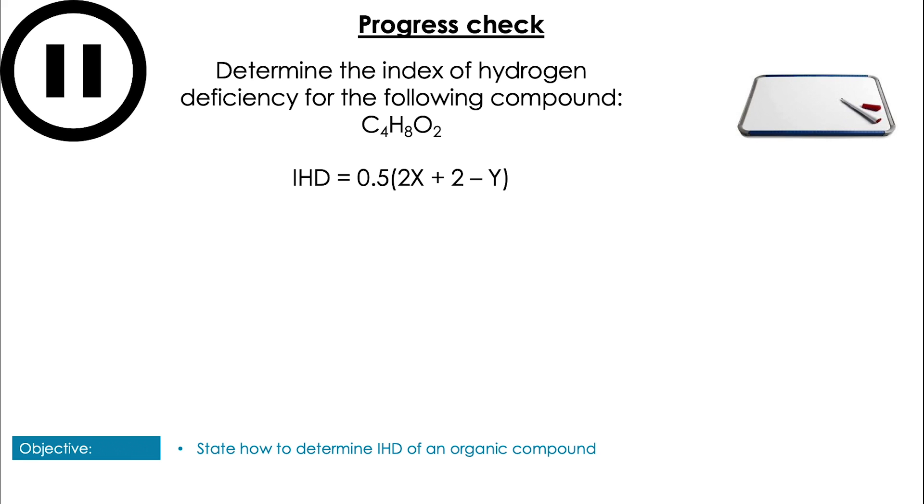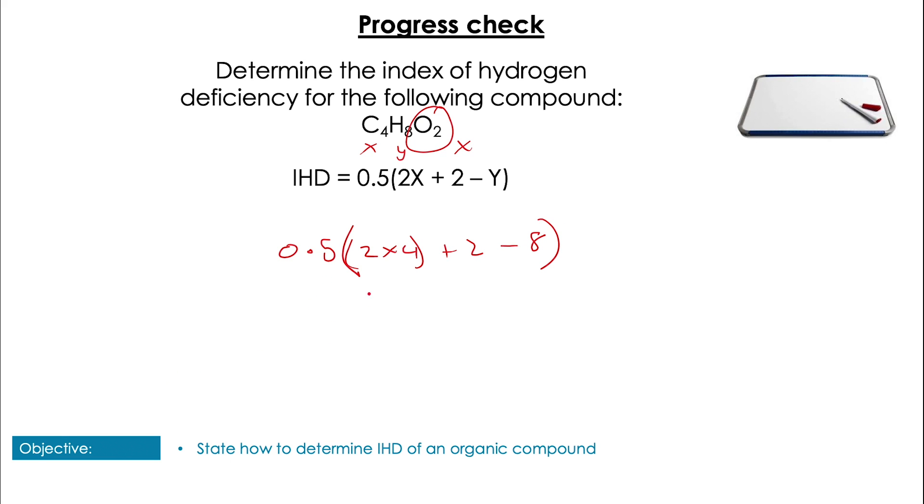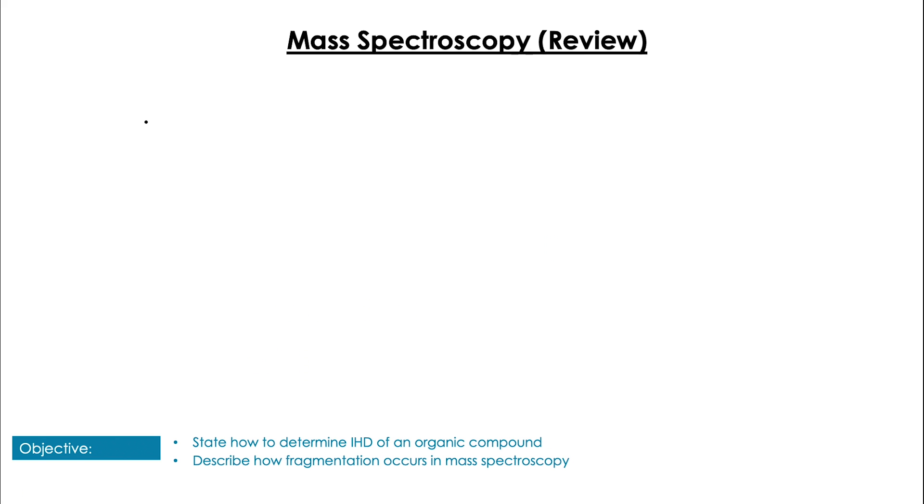In this question, have a go at using the IHD formula to calculate it instead. Pause the video to give yourself a moment for that. So remembering x is carbons and y is hydrogens, and oxygen does not affect our value, so we're just going to have 4 for a value of x and 8 for our value of y, which solves to give us an IHD of 1 overall.